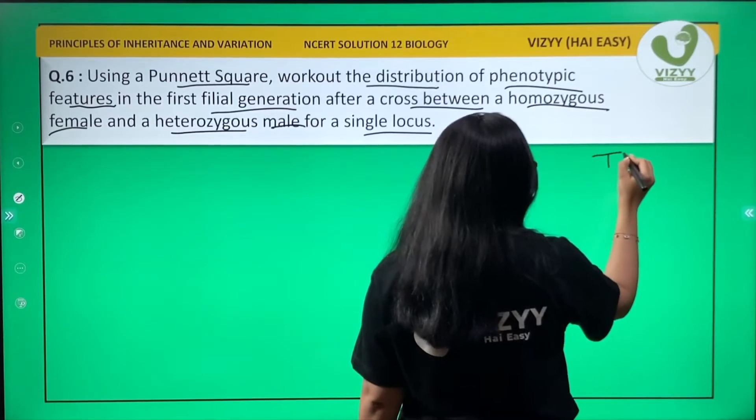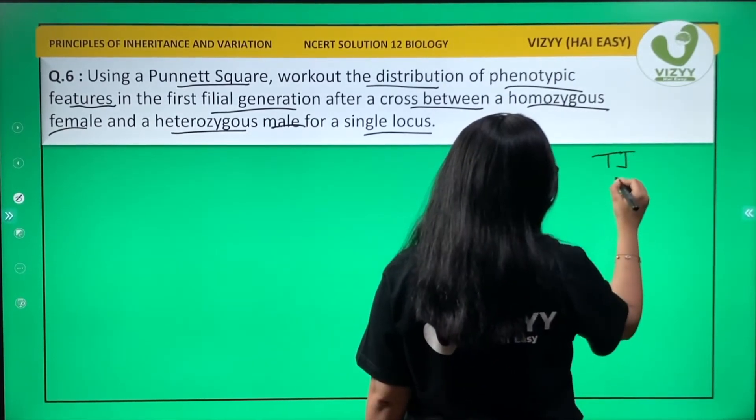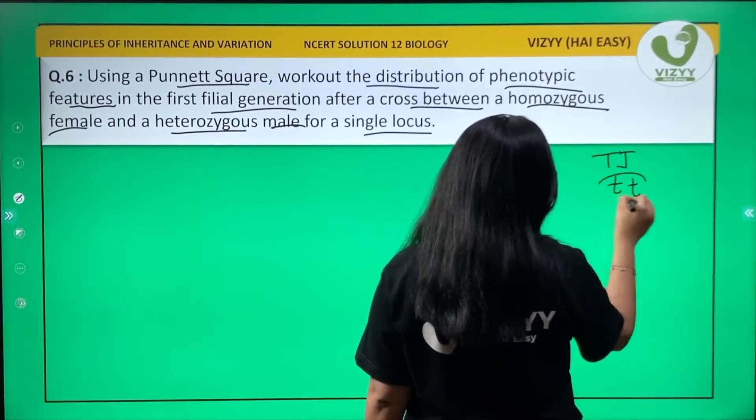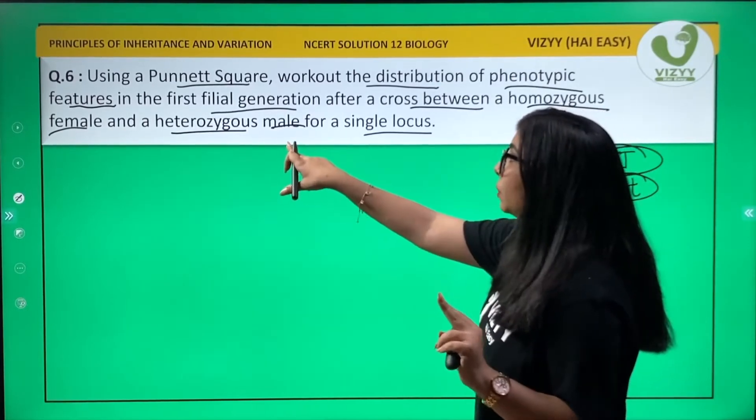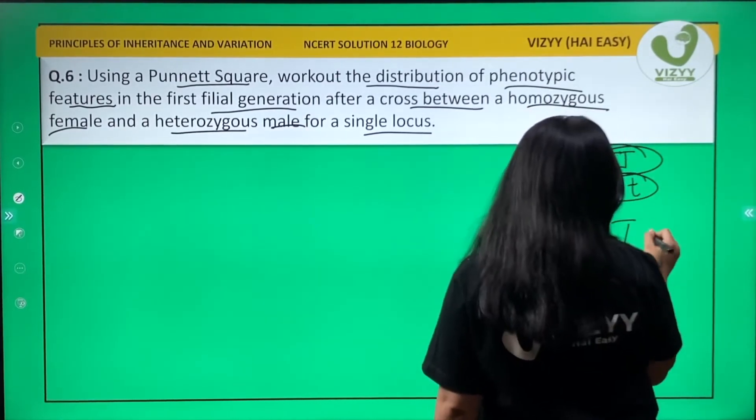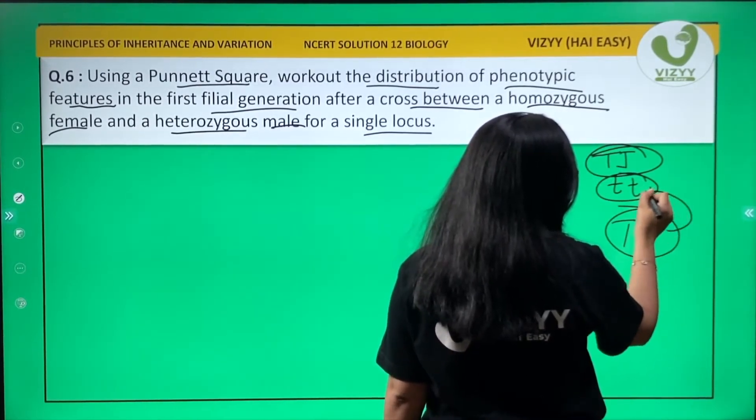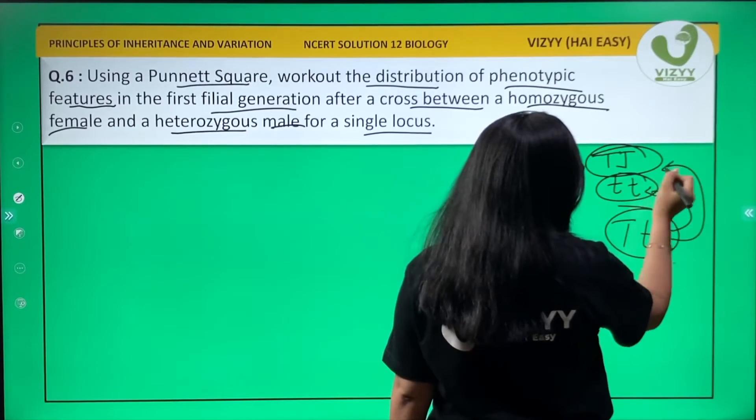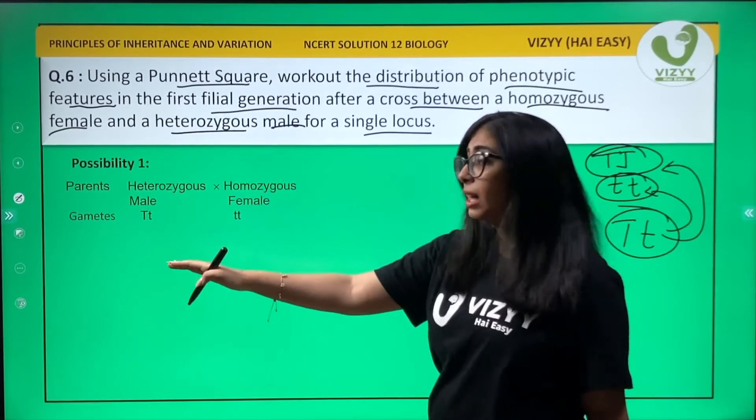There are two possibilities. The male is heterozygous dwarf, so it is crossed with both possibilities. Possibility 1: parents are heterozygous male crossed with homozygous recessive female.